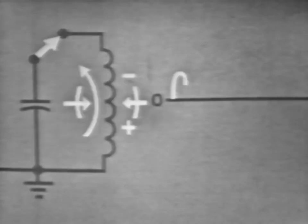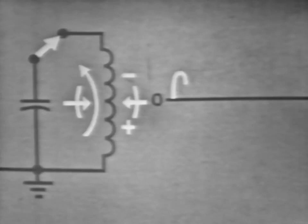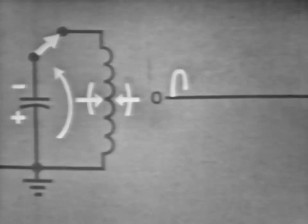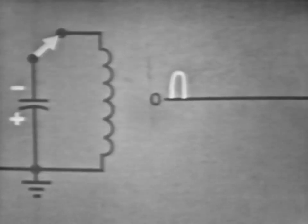That is, the field will begin to collapse, reversing direction, thus reversing the polarity of the induced voltage, causing current to flow in the same direction. Or the coil becomes the source as the energy stored in the magnetic field is put back into the circuit, causing the capacitor to charge in the opposite direction. Now, when the field about the coil is completely collapsed, current is zero, and the capacitor is charged in the opposite direction.